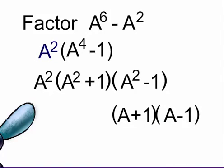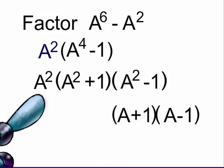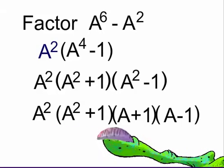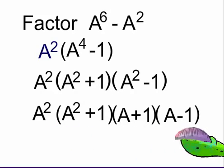We again need to bring down our other factors, a squared and a squared plus one. So our answer now reads, a squared times a squared plus one times a plus one times a minus one.